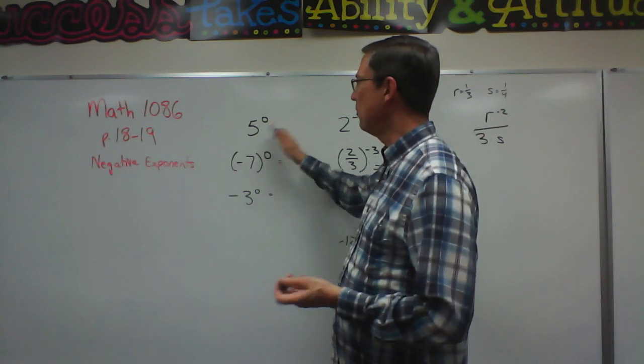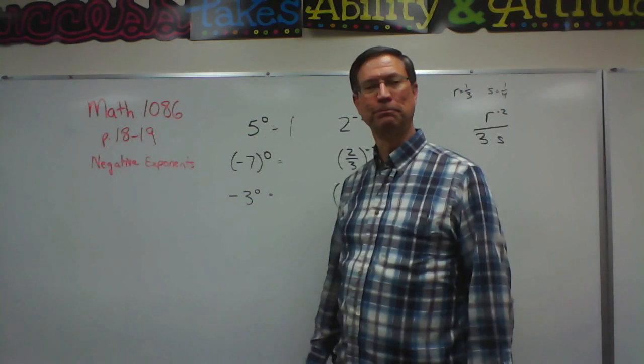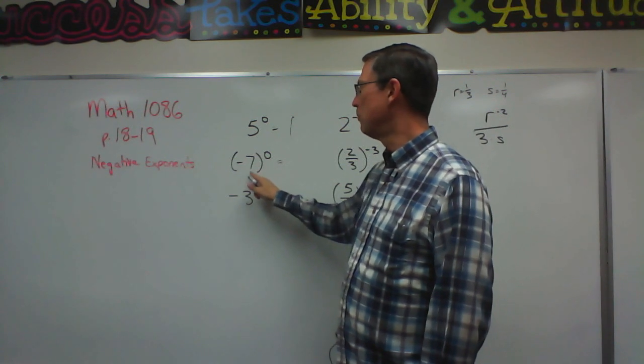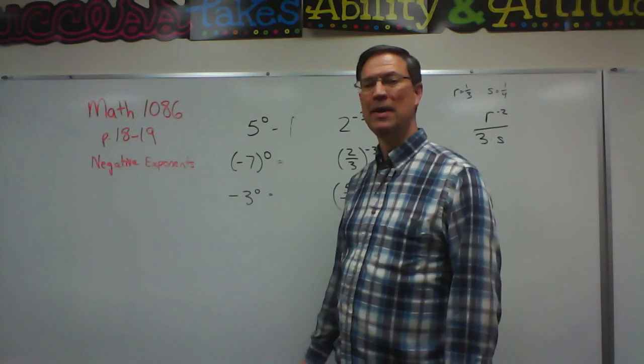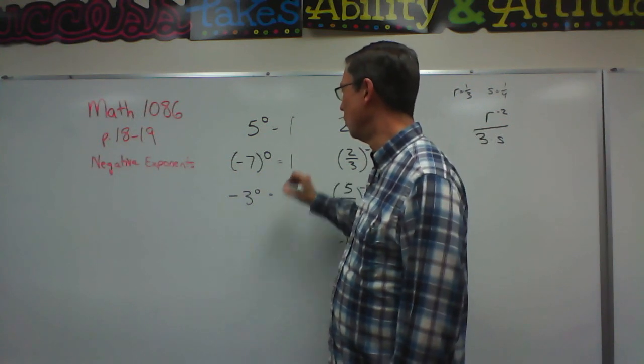So even if five, five to the zero power, it's one. This looks a little trickier because we have parentheses and we have a negative number in there. Doesn't matter. It still just becomes the number one.